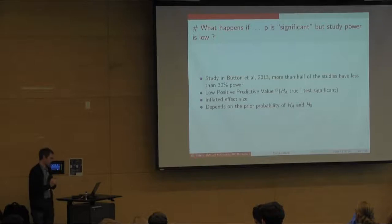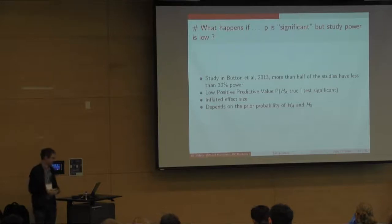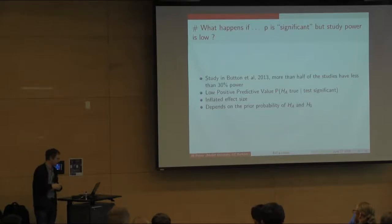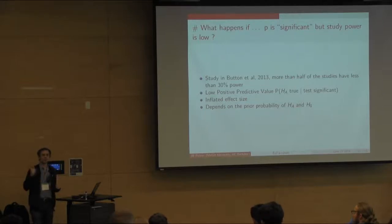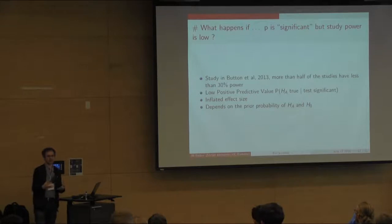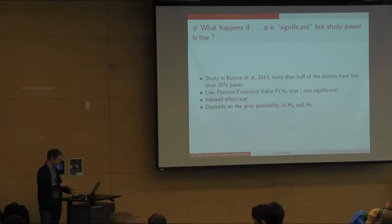When P is significant but power is low, at least three things happen. First, power is low — you have little chance to find anything. Second, you will get an inflated effect size — you'll find something because it's significant, but that effect size is going to be way above the actual effect size. Third, the positive predictive value — the probability that H1 is true given the test is significant — is going to be very low.